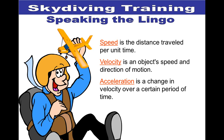Before we talk about specifically speed, velocity, and acceleration, we need to discuss the difference between a scalar quantity and a vector quantity. Scalar quantities refer to something that has magnitude only. For example, how much money you have in your purse or wallet is a scalar amount — it just has an amount. You either have $20, $10, or 35 cents.